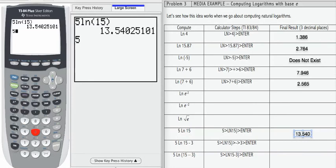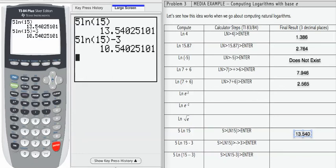5 natural log 15, only the 15 is attached to the natural log, minus 3. Enter. Gives me 10.540.